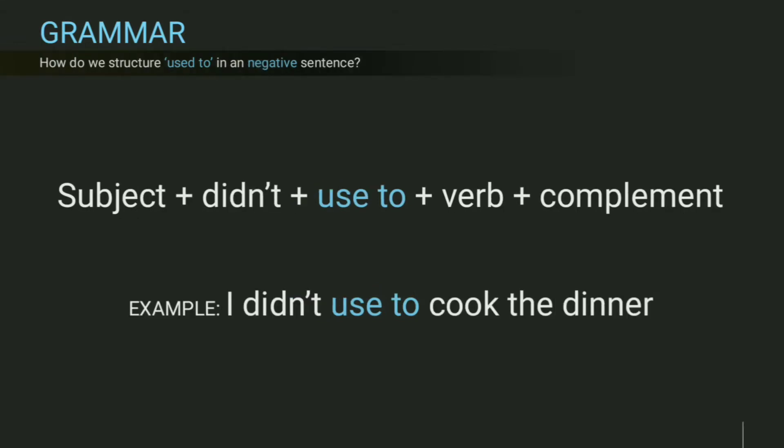How do we structure used to in a negative sentence? Put subject plus didn't plus used to plus verb plus complement. Pay attention — in a negative sentence, put used in present. For example, I didn't used to cook the dinner.